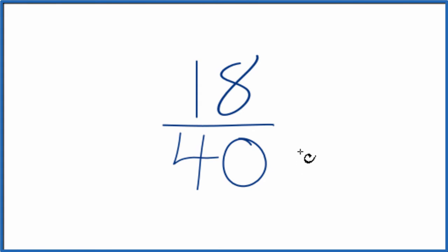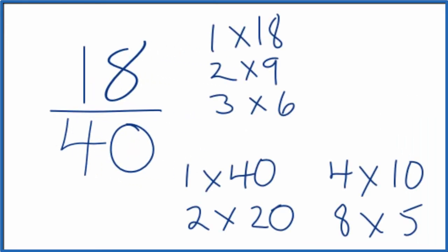To do that, we need to find a common factor, something that goes into 18 and 40. So let's list the factors for 18 and 40. These are the factors for 18 and these for 40. The only common factor is going to be 2. That's our greatest common factor.